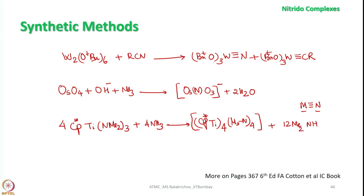As I mentioned, we can also make dianionic compounds of N — for example, RN²⁻. This is also a very important ligand in some metal complexes that can be used in metathesis and also in some organic reactions. So let me give the preparative methods of imido complexes.